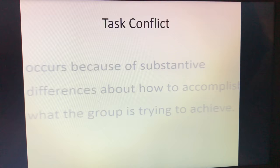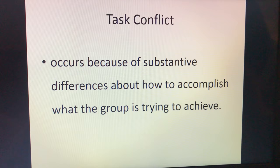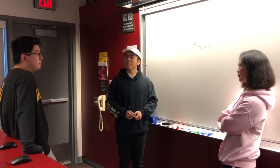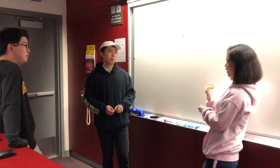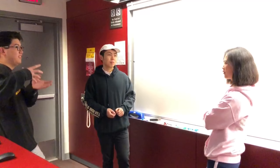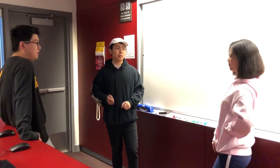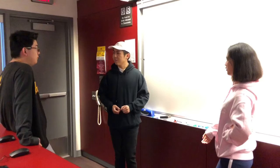Task conflict occurs because of substantive differences about how to accomplish what the group is trying to achieve. Hey guys, what should we do for the movie project? I think we just use some video from around UCI. Let's make a movie ourselves. We can find something online instead. No, no — we can do it ourselves. It should be us.